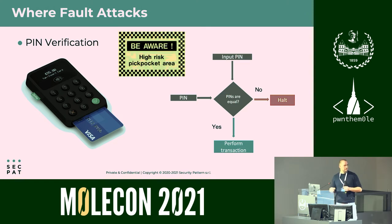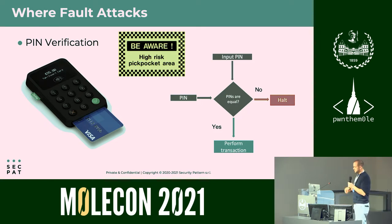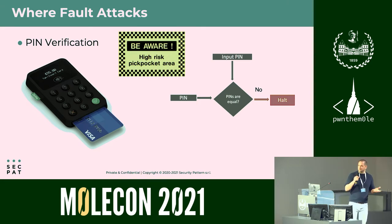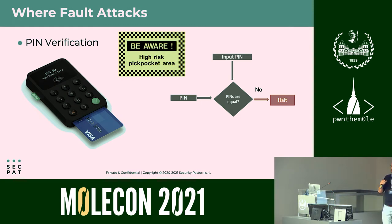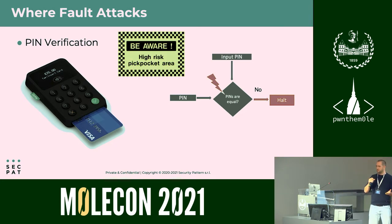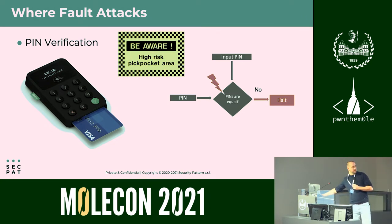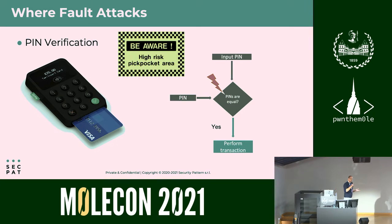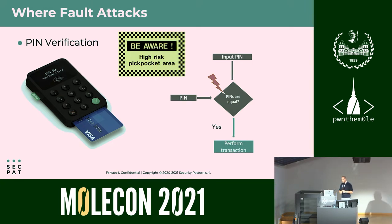What happens is that there exist pickpockets. If your card is stolen, there's only one thing preventing the pickpocket from performing a transaction with your money — that input PIN. If the pickpocket doesn't know the right PIN, he will not be able to perform a transaction. But what can happen is that the hacker can try to fault this execution in order to obtain a correct transaction, accepting a wrong PIN as if it were the correct one.